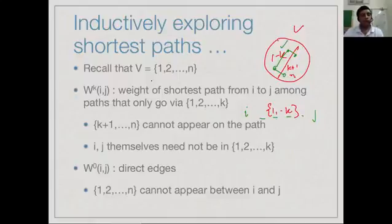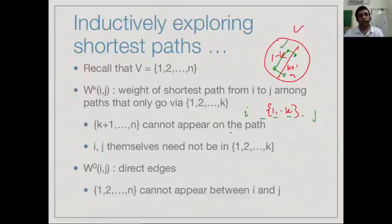In particular, if k is 0, since our numbering is 1 to n, no vertex from 1 to n can appear on the path. So w_0(i,j) can only use a direct edge from i to j. This is the base case: the shortest paths that exclude all intermediate vertices are simply the direct edges between i and j.